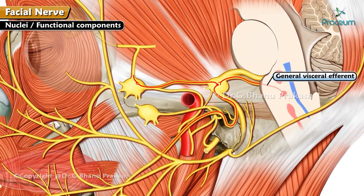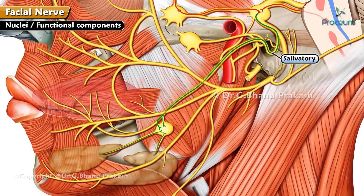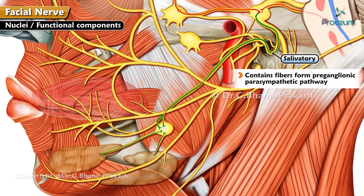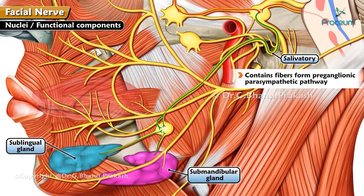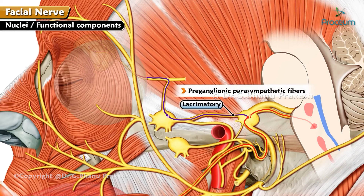General visceral efferent: the superior salivatory nuclear complex contains two components, the salivatory and lacrimatory nuclei. The superior salivatory nucleus contains fibers from the preganglionic parasympathetic pathway for the submandibular and sublingual salivary glands. The axons of the lacrimatory nucleus are preganglionic parasympathetic fibers to supply the lacrimal gland.